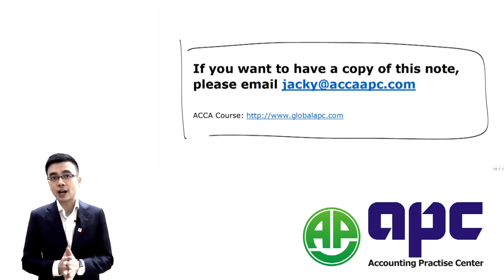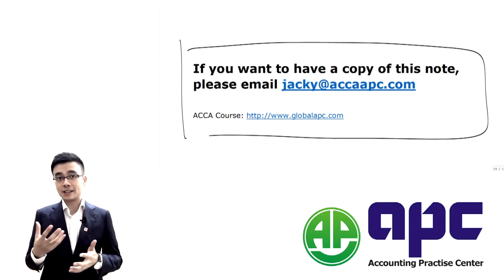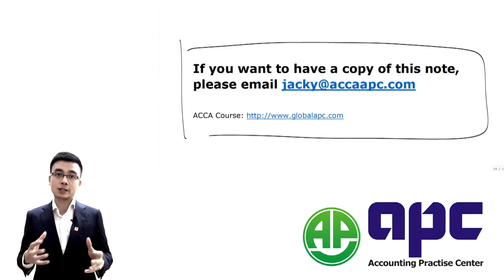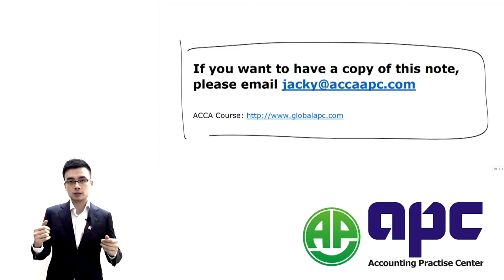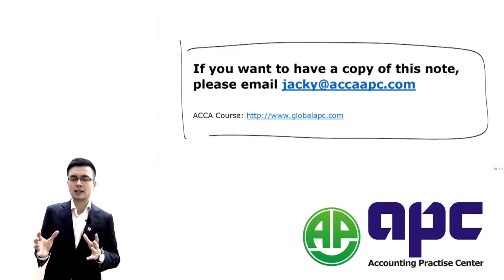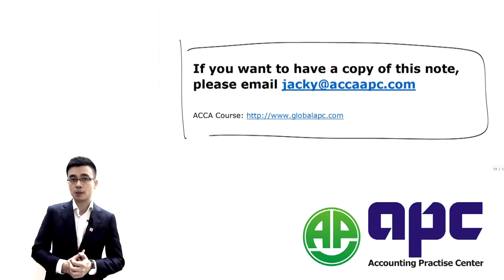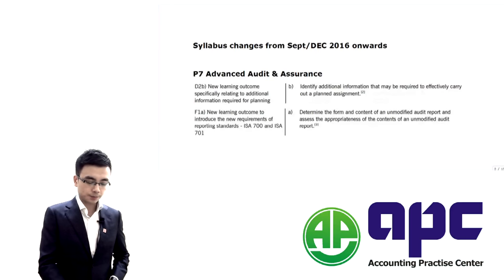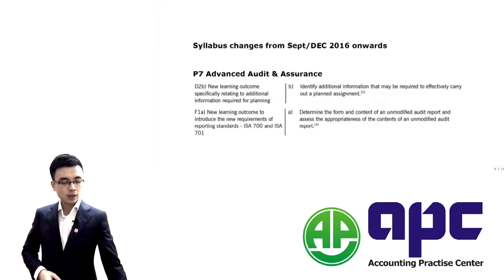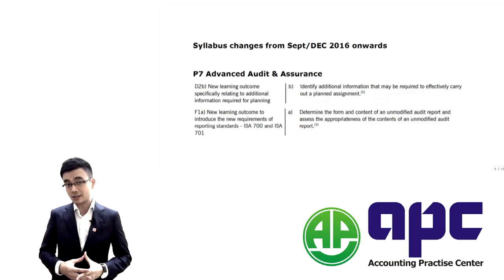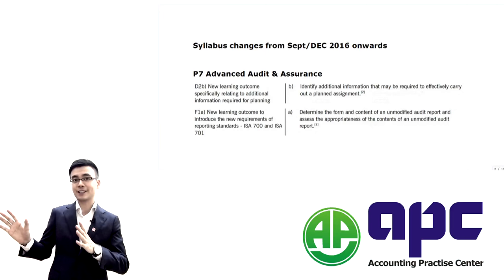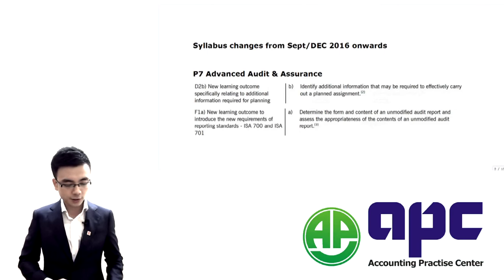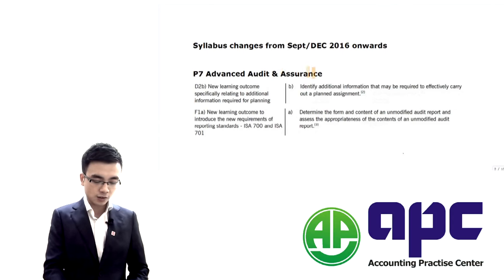In the second part of this video, I'm going to go through the syllabus changes from September, December 2016 onwards. Because for some of the papers, there are lots of changes in the syllabus compared to other papers. You have to be aware of this before you progress your study. I'm going to start with P7 onwards, from P7 to P5, P4, etc. So first of all, we've got P7, Advanced Audit and Assurance.